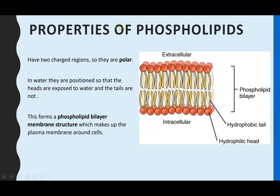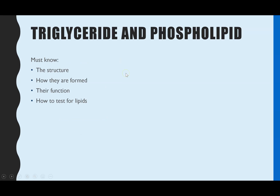Phospholipids are described as being polar because of these two different charged regions. For the lipid topic, make sure you know the structure of a triglyceride and phospholipid, how they're formed by condensation reaction and the bond that is made, their properties and functions, and how you test for lipids — the emulsion test.